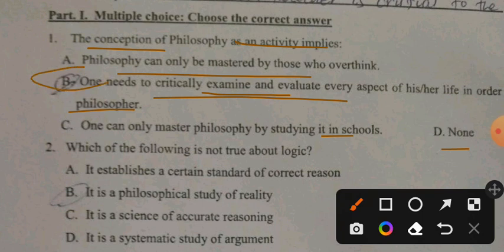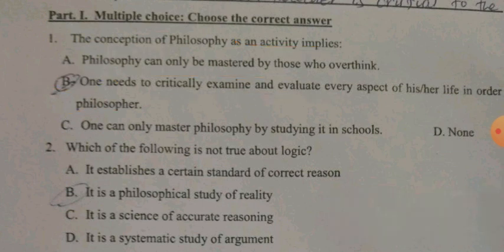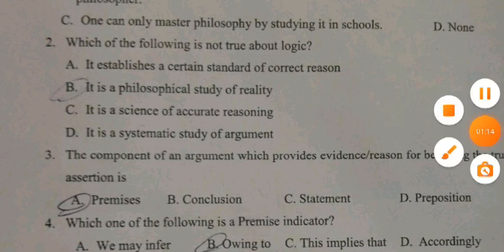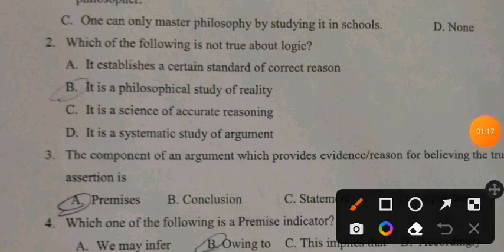Question 2: Which of the following is not true about logic? A. It establishes a certain standard of correct reason. B. It is a philosophical study of reality - reality, no. C. It is a science of accurate reasoning. D. It is a systematic study of argument.